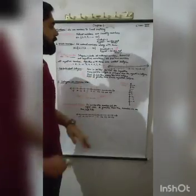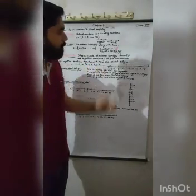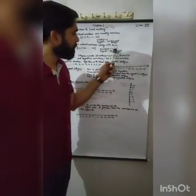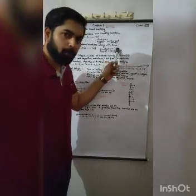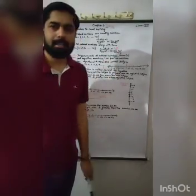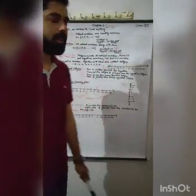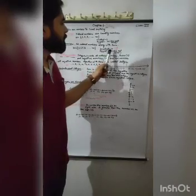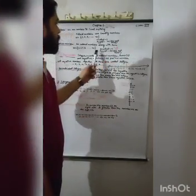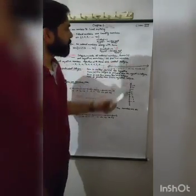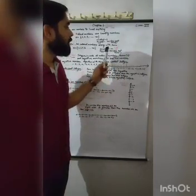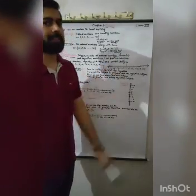The symbol for infinity represents that whole numbers go on forever. In the set of whole numbers, 0 is the smallest whole number — this is also very important. So what is the smallest whole number? 0 is the smallest whole number. And there is no biggest whole number — it does not exist.